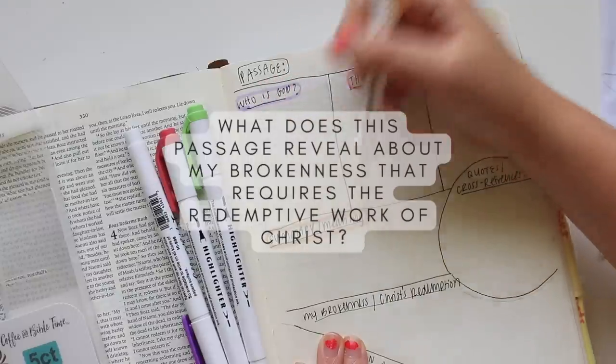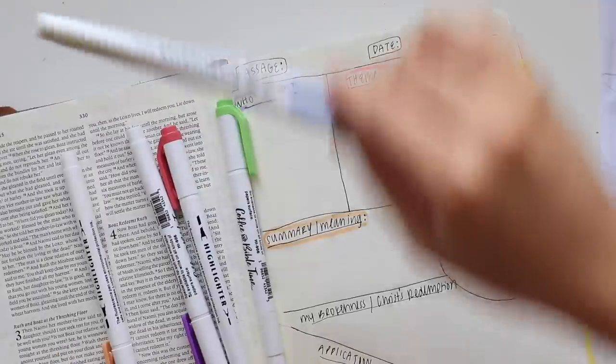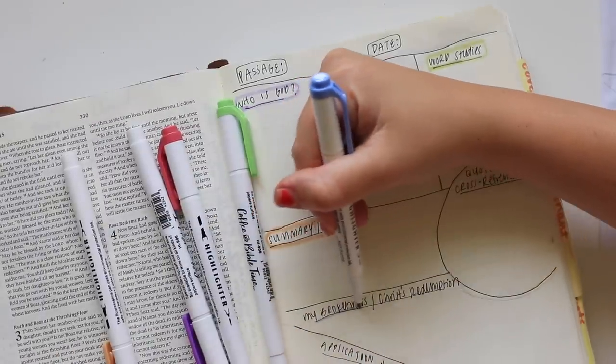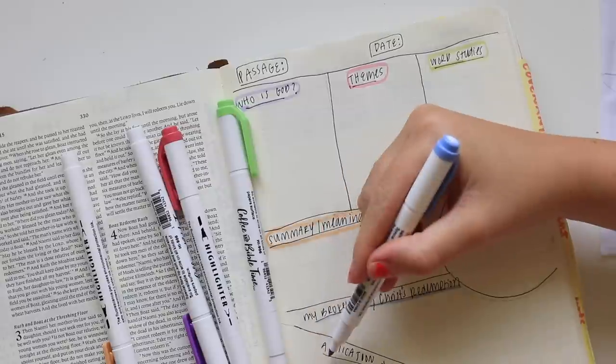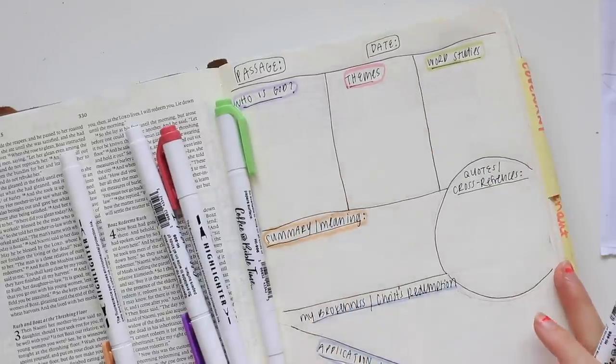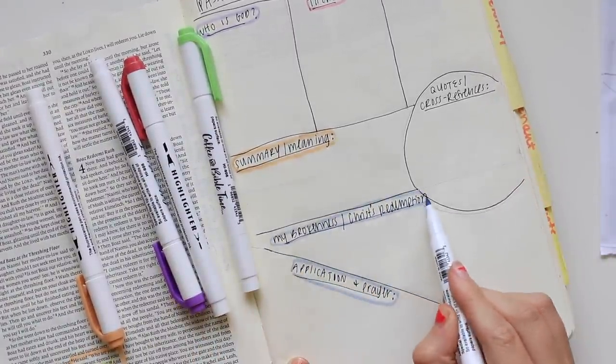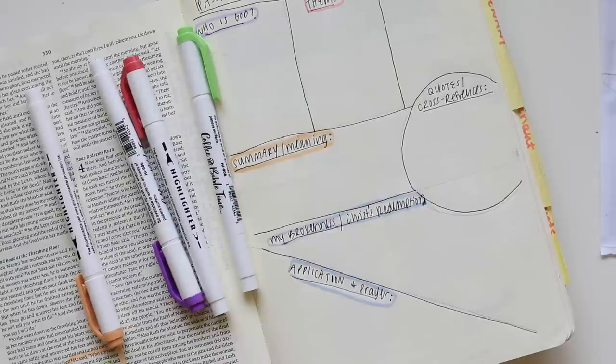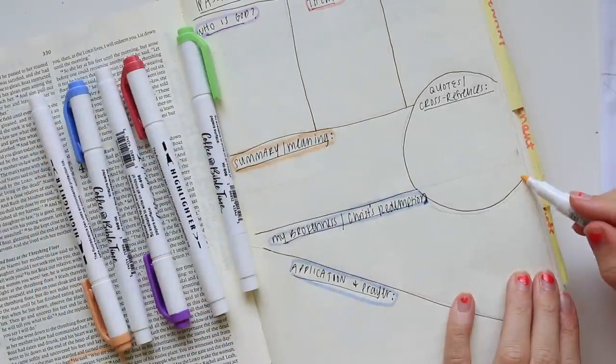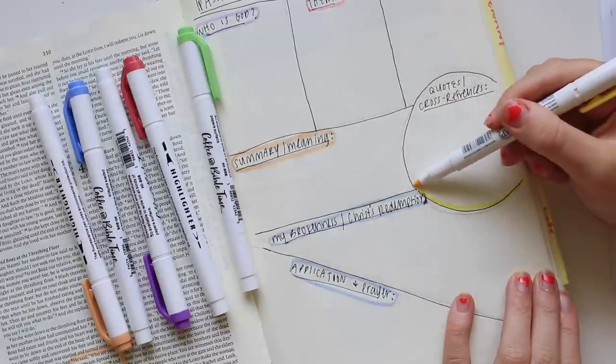The entire Bible points to Jesus. One of the biggest failures or mistakes I can do when reading my Bible is think that it is just a self-help book, a list of do's and don'ts - what I have to do to become a better person. The gospel is that we're all broken, we're all messed up, we're all sinful, and we need the redemptive work of Christ in our lives. I can't just read the Bible and force myself to become a better person.